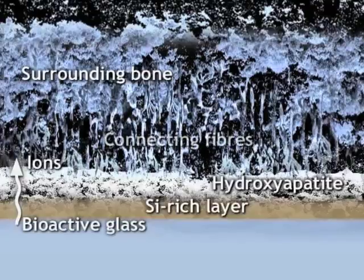This makes Bonolive a very unique material. Bonolive is an osteoconductive material which means that it allows bone growth along its surface. The bone will grow on the glass granule and between the granules, and after a while the whole bone substitute is incorporated in the body.